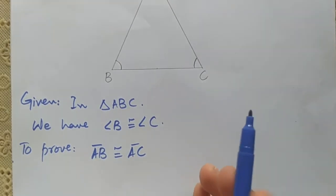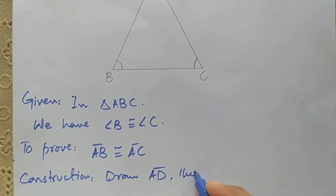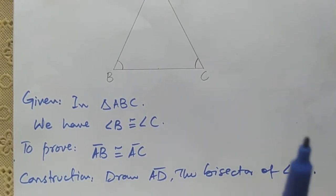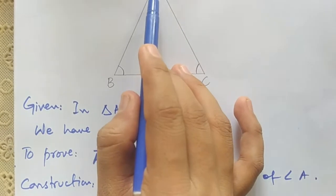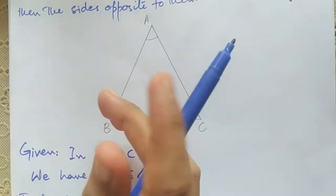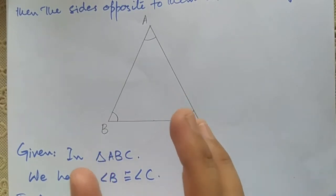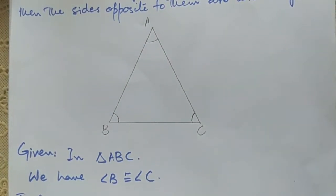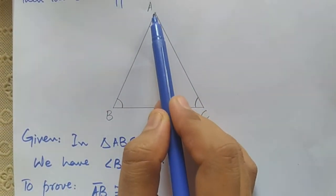For the construction, we draw AD, the bisector of angle A. There are two types of bisectors — angle bisector and side bisector. Here we draw the angle bisector of angle A, which divides angle A into two equal parts.